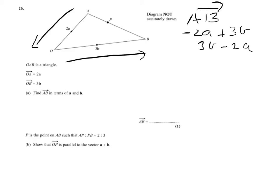The second part of the question tells us that P is on the point AB, such that AP to PB is 2 to 3. So I'm going to put the 2 there and the 3 there. And I've got to show you that OP is parallel to the vector A+B. So if it's parallel, what you're trying to show then is that OP is some multiple of A+B. And if you do that, you've proved that it's parallel.